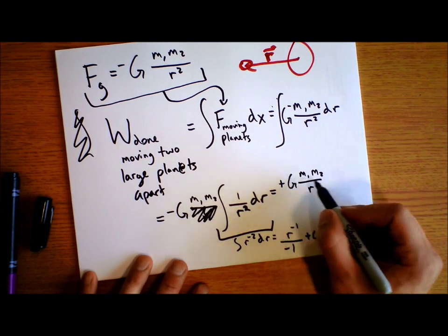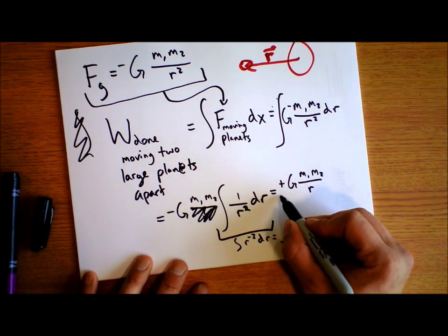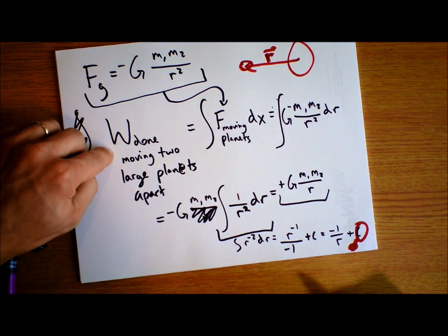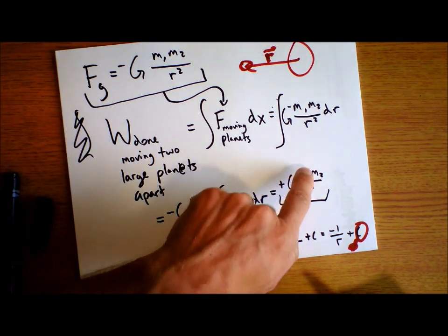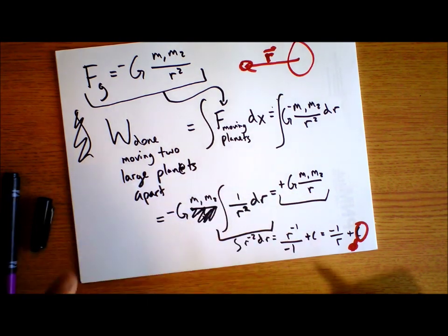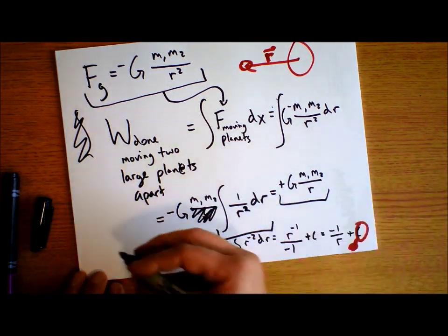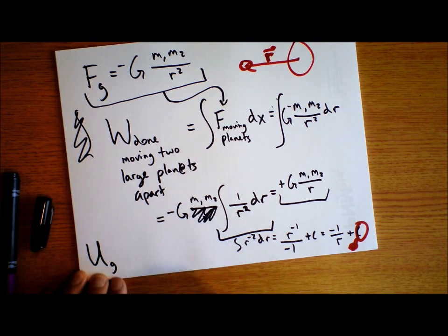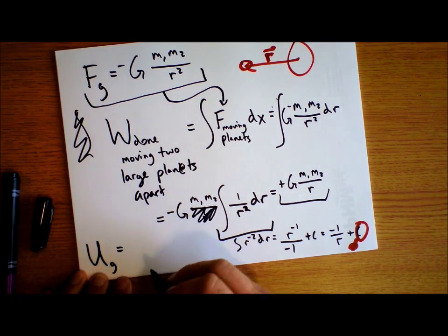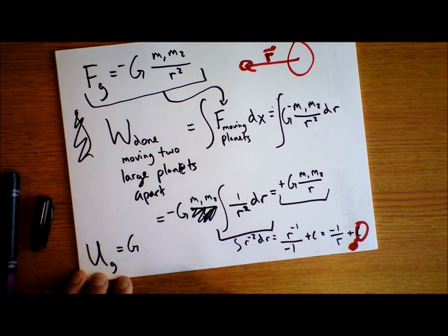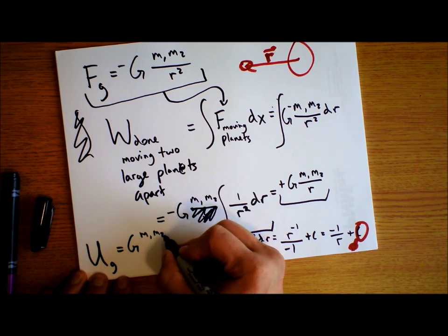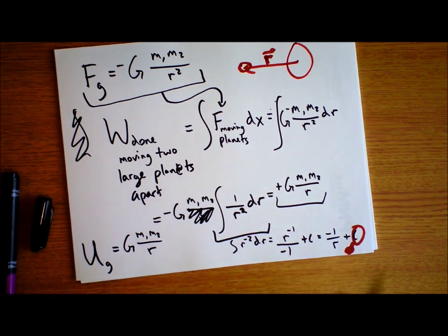So the work done while moving apart two large planets is G times m₁ times m₂ over r — not r squared. In fact, the gravitational potential energy between two large masses is capital G times m₁ times m₂ divided by r. And that's how we get it. Awesome, right? Let's keep going.